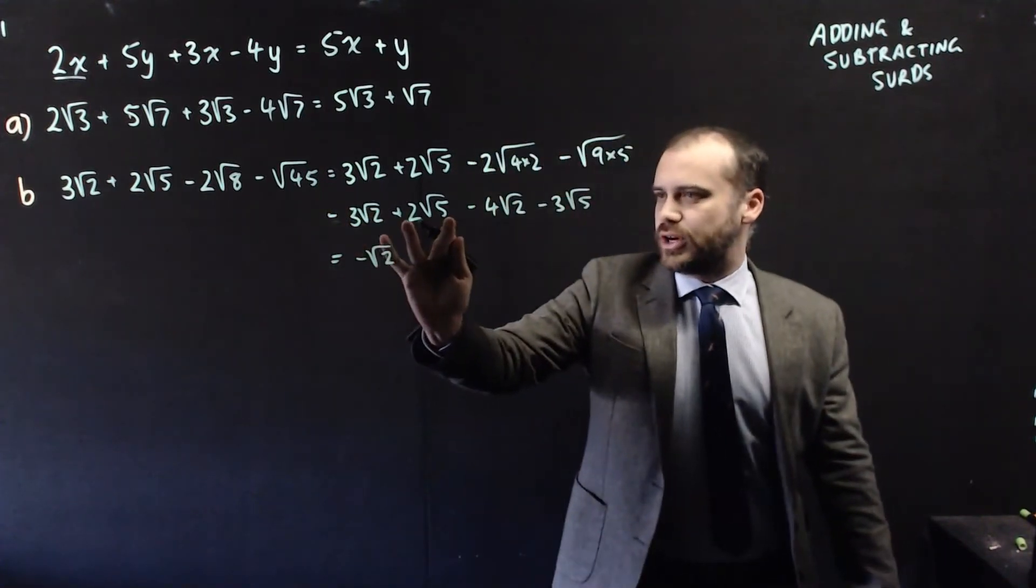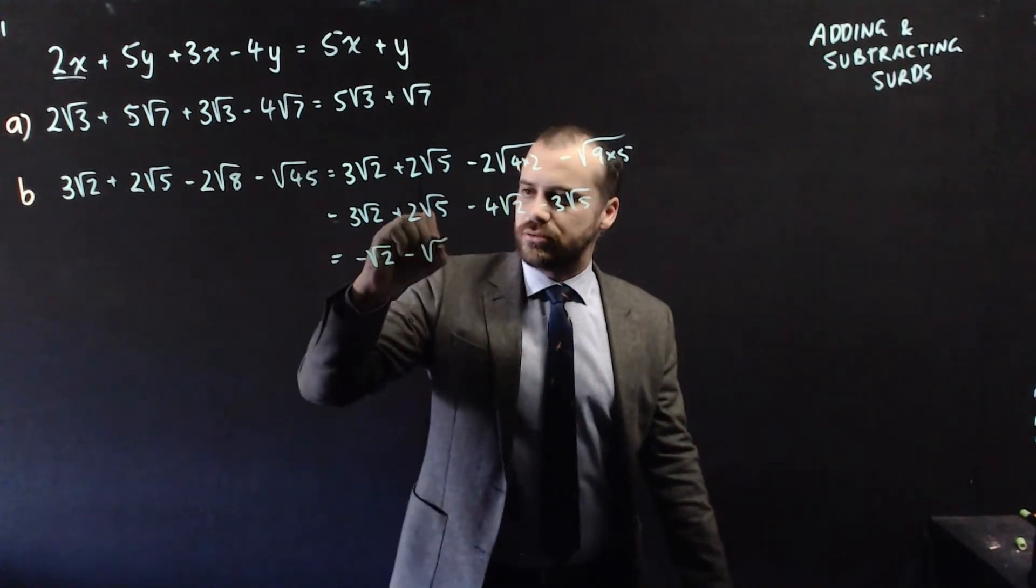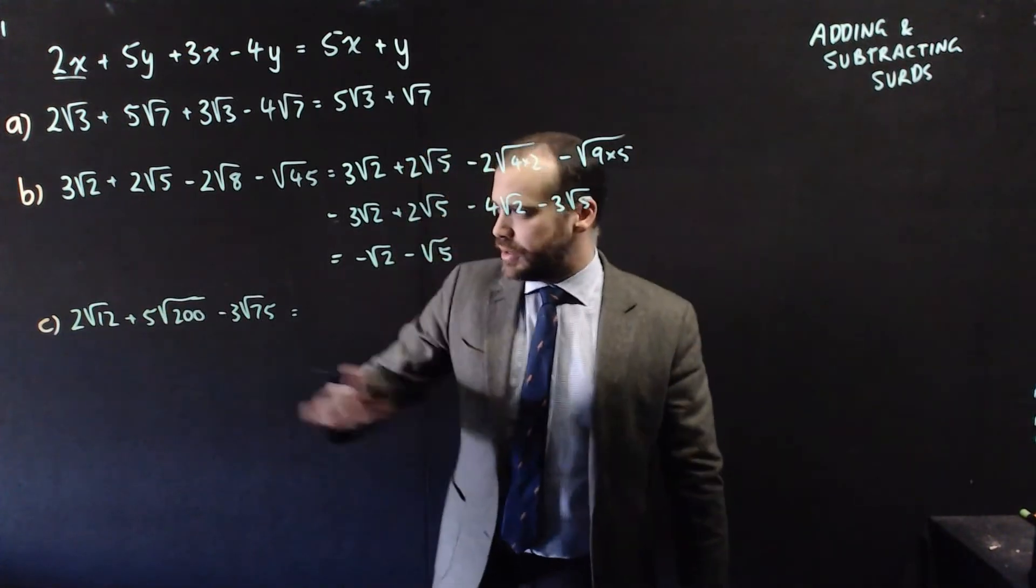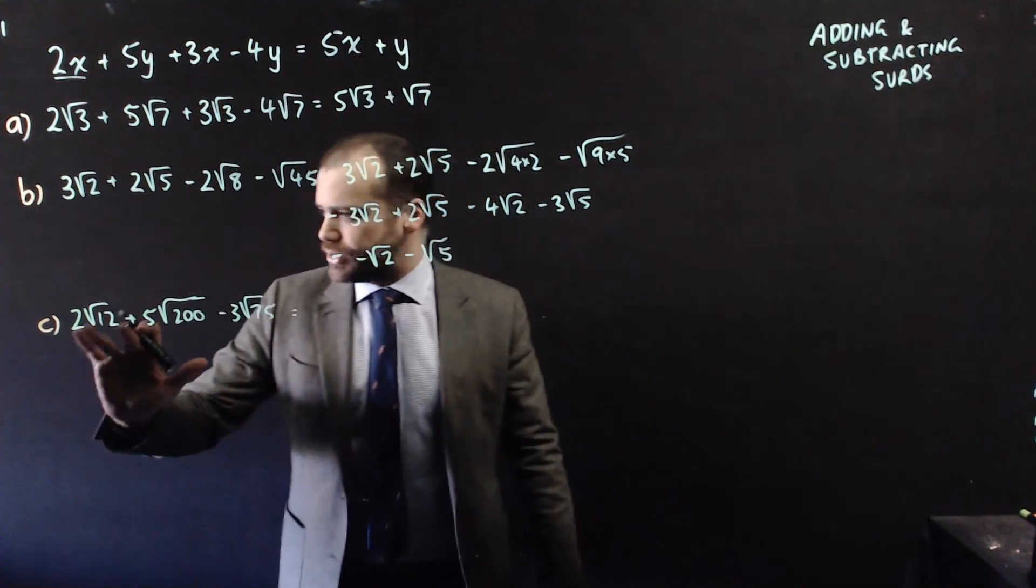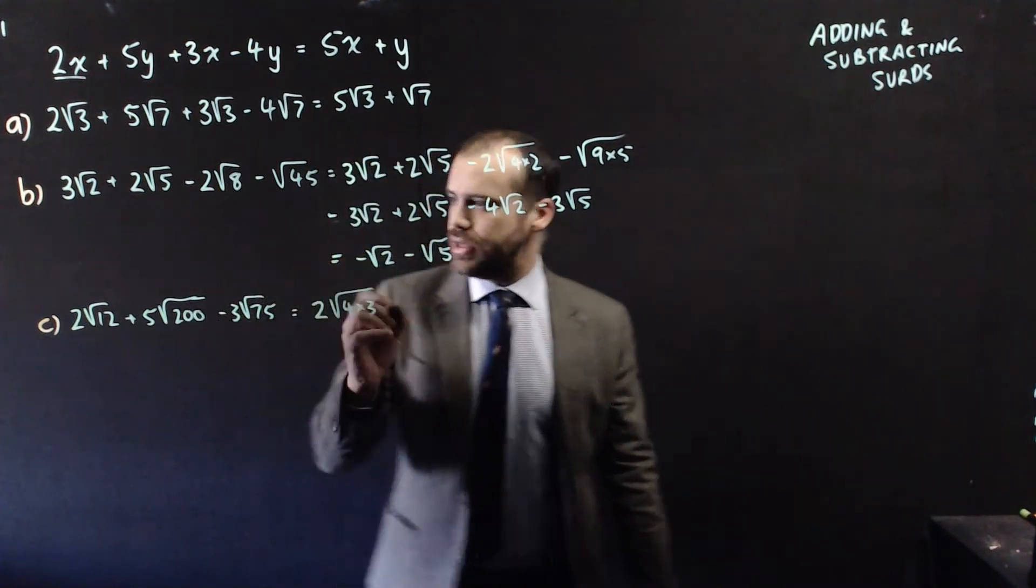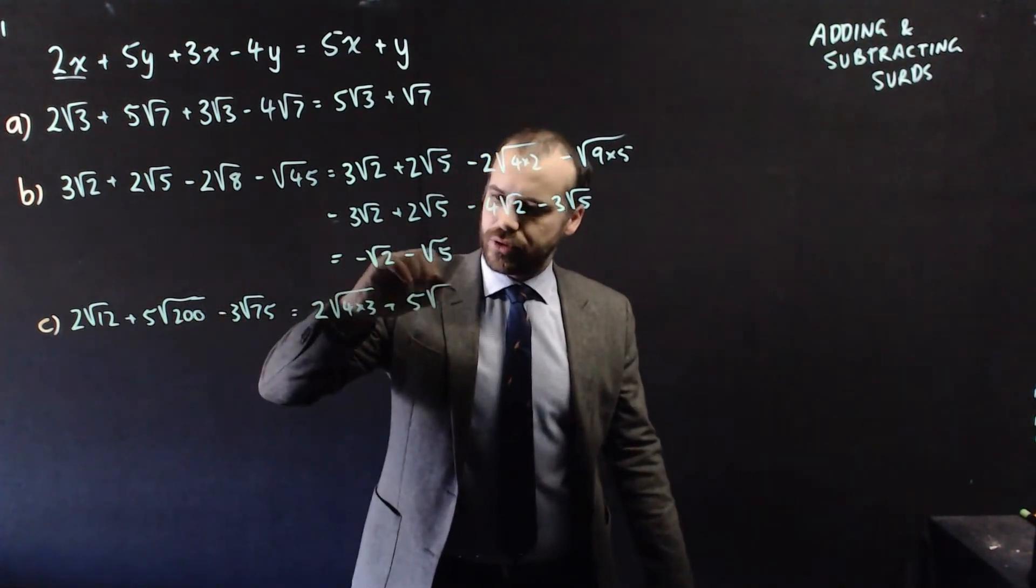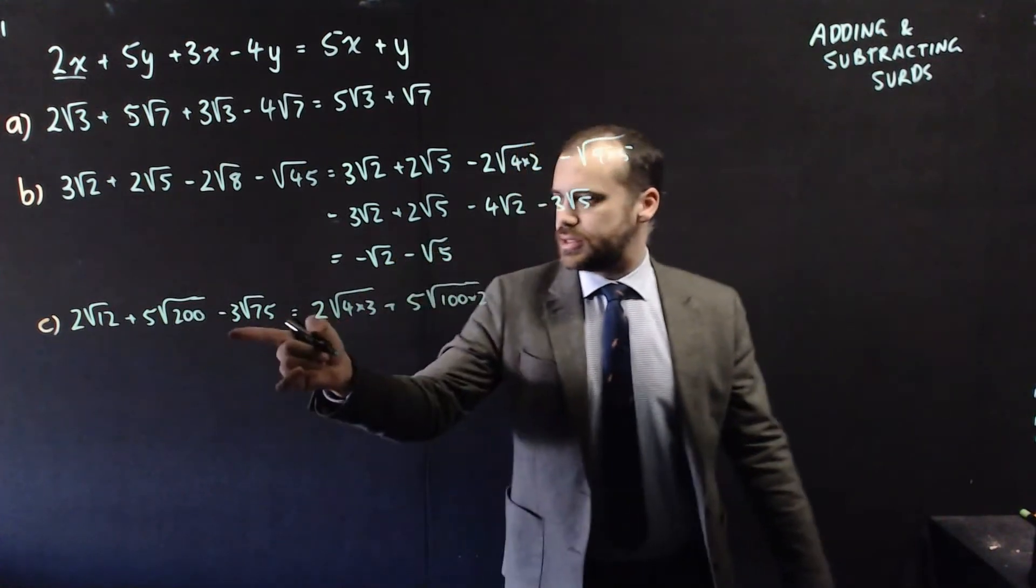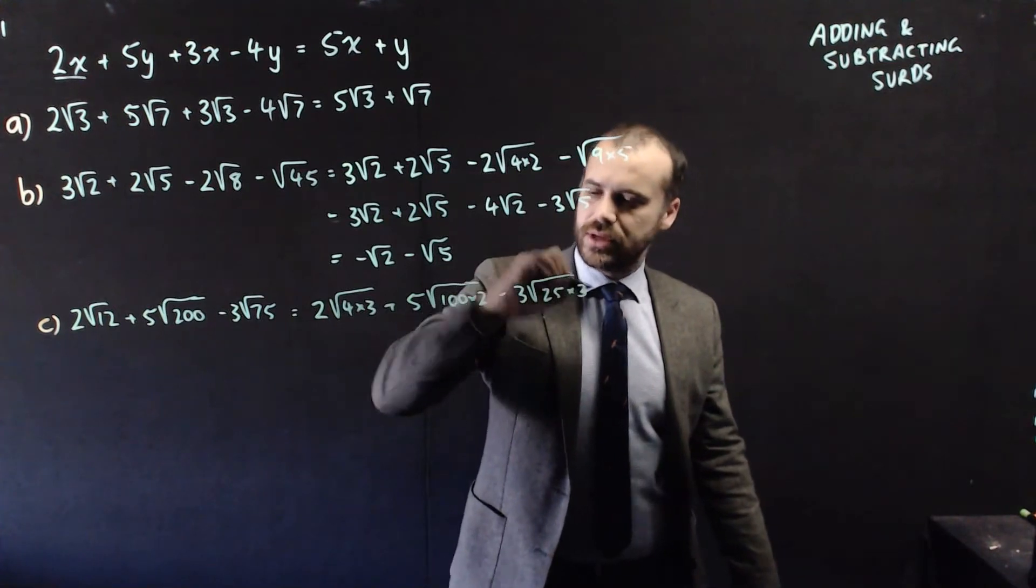Now this one is more complicated again because we need to simplify everything that we see here. So 2 root 12 is the same as 2 root 4 times 3. Plus this is the same as 5 root 100 times 2. And this is the same as negative 3 root 25 times 3.